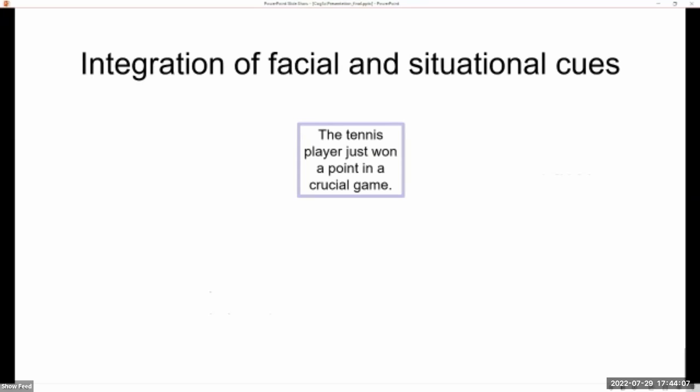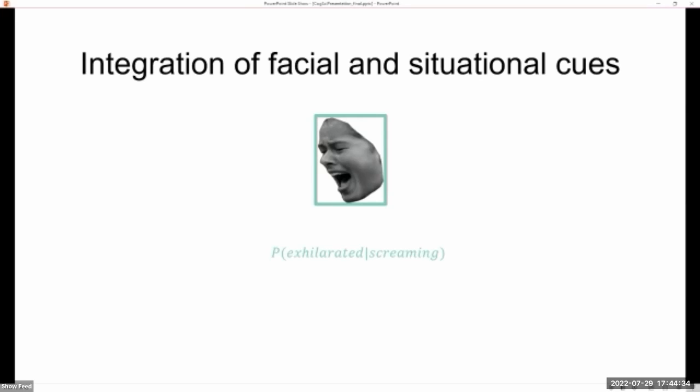So for instance, when observers are shown this situational information suggesting that a tennis player has just won a point and asked to infer the probability of exhilaration given this situational knowledge, you can expect people to infer a high probability of exhilaration. On the other hand, when people are shown this image of a person screaming and asked to infer exhilaration, you can imagine observers inferring a low probability of exhilaration given this facial expression.